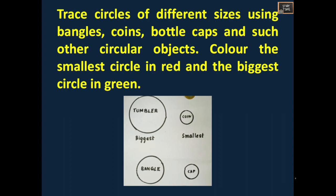Here, trace circles of different sizes using bangles, coins, bottle caps and such other circular objects. Color the smallest circle in red and the biggest circle in green. You are going to color the smallest circle in red and the biggest in green to make the difference. Whichever objects you have placed, you can find the biggest and smallest and color them in green and red.